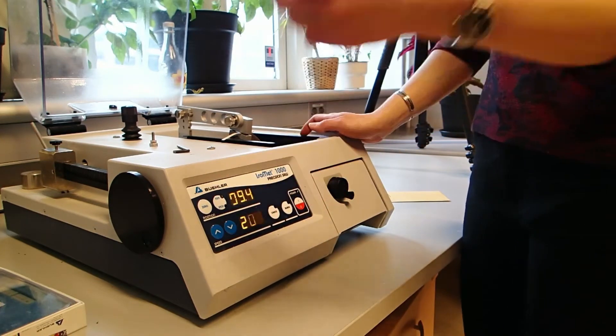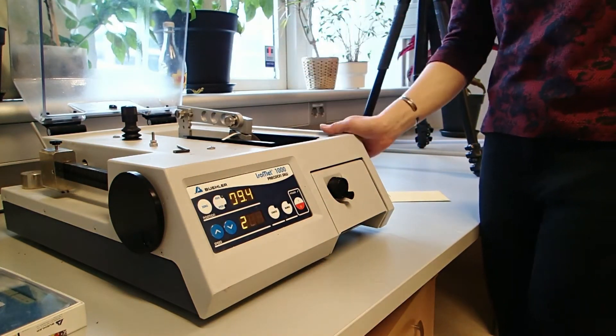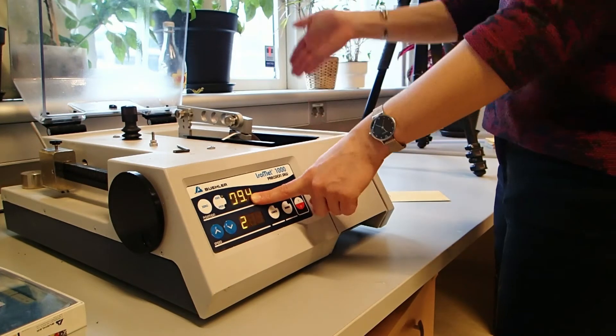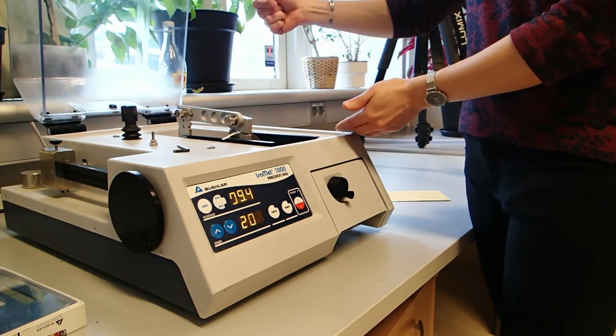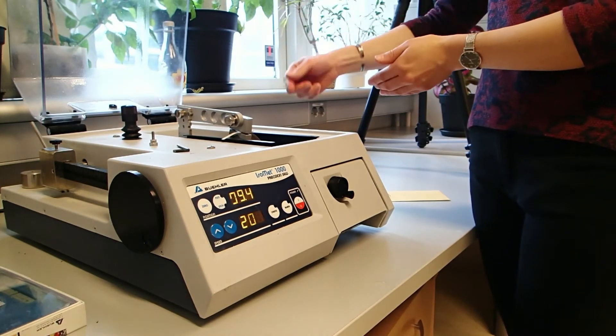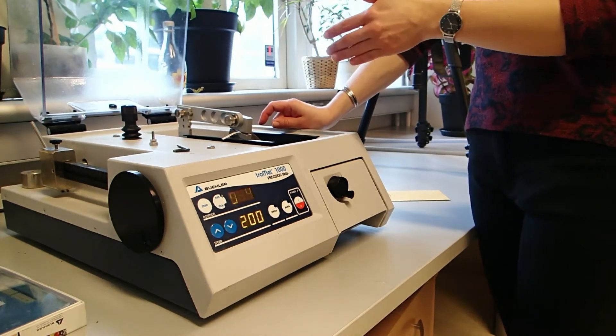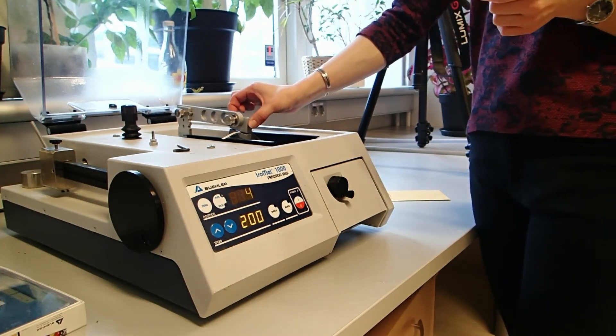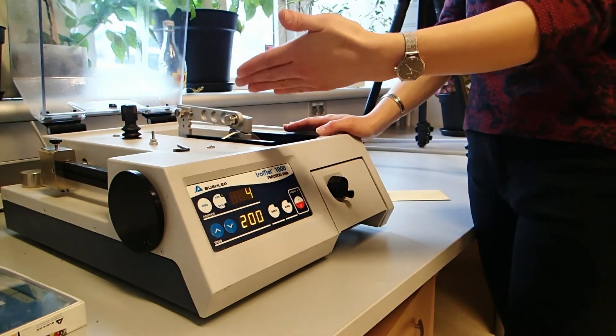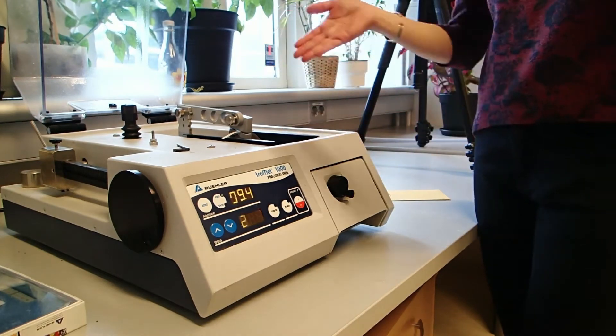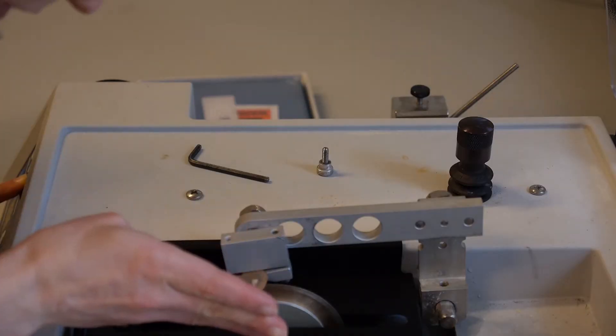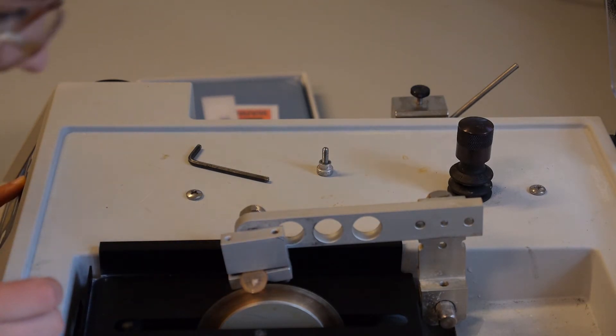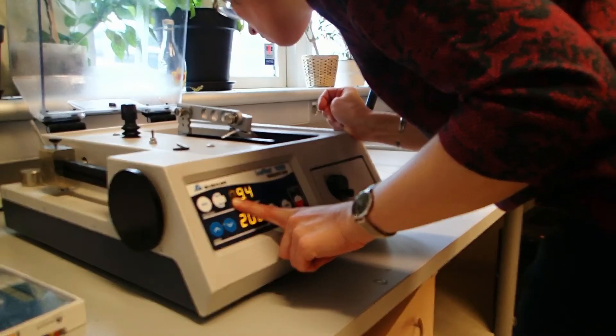This is 99.4. We want to make sure that we cut to the right side of the line first, because then just this part we're not interested in is falling off and the section is still attached to the sample holder. If you cut to the left first, you haven't lost the sample, but it's way more work because you have to align everything again.